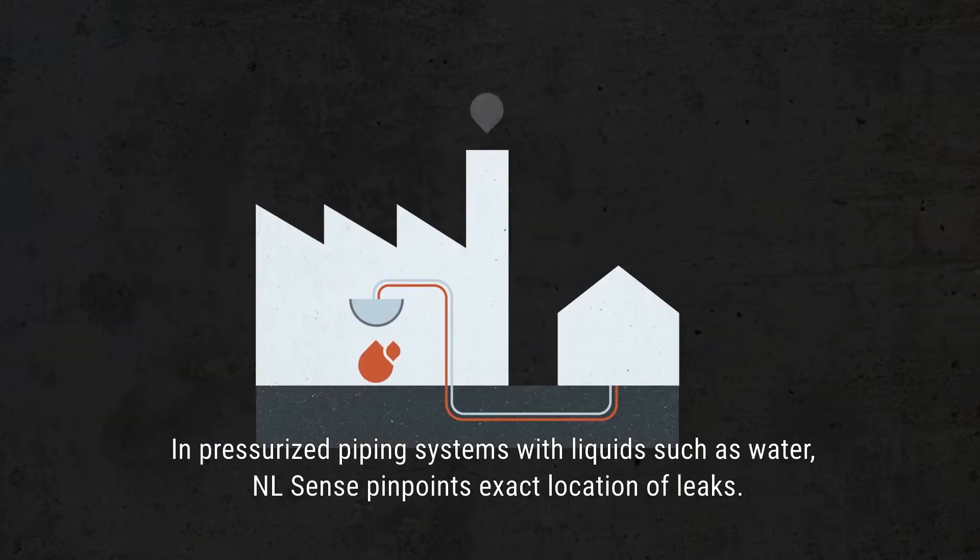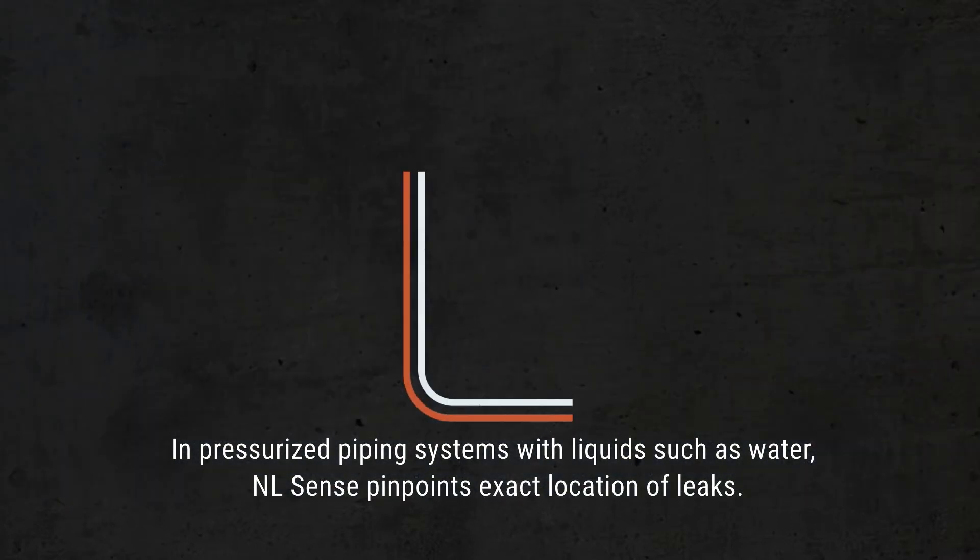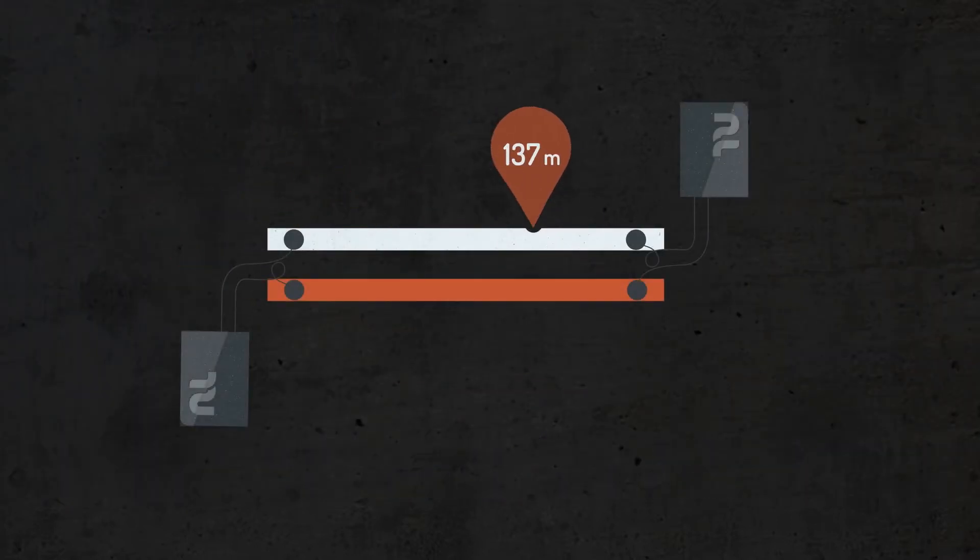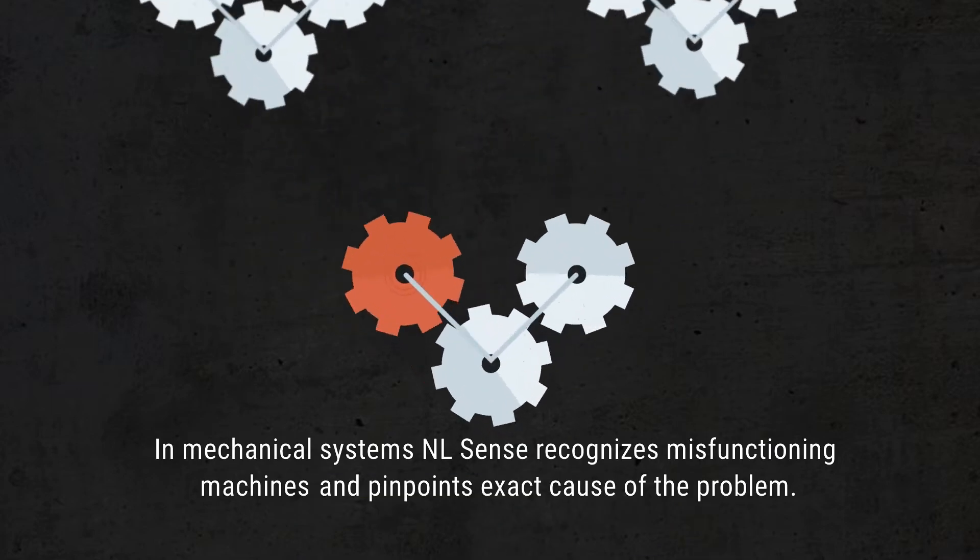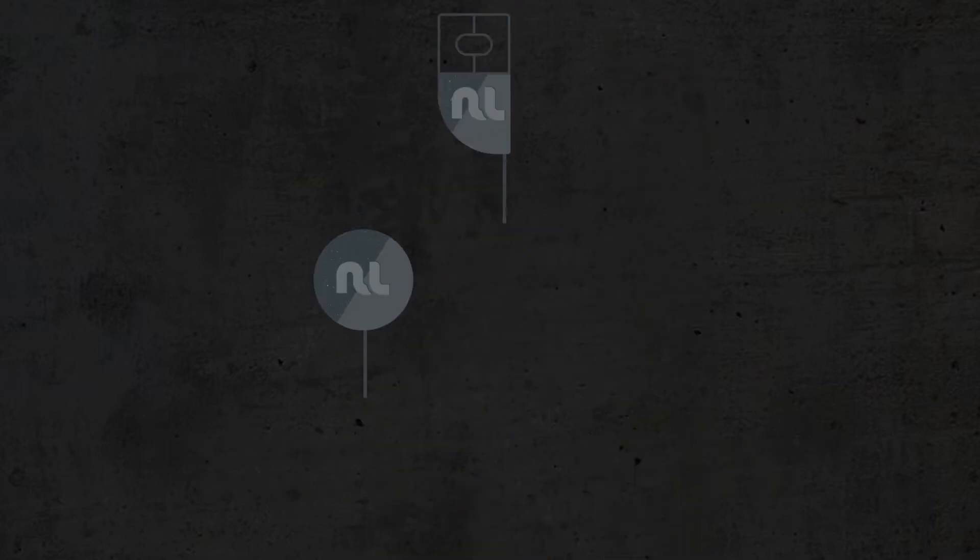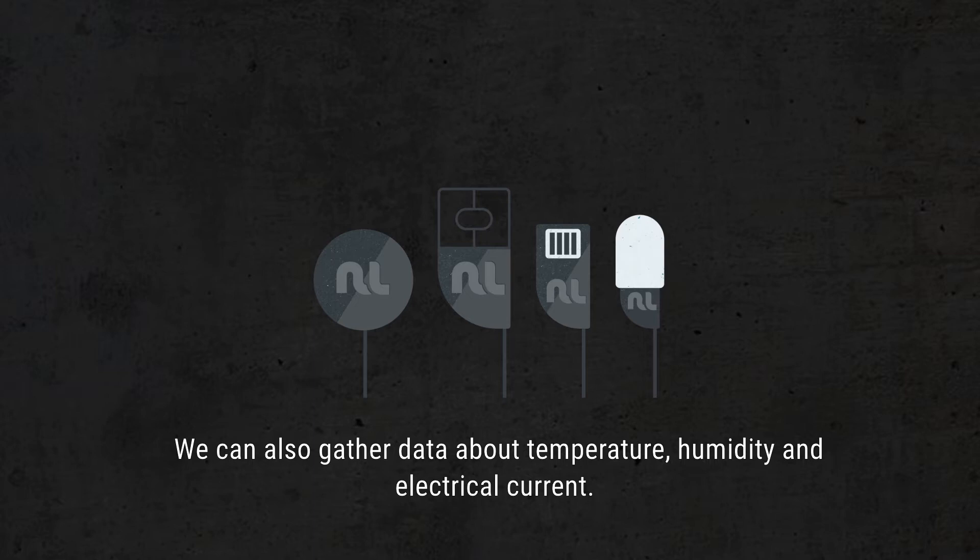In pressurized piping systems with liquids such as water, NL Sense pinpoints the exact location of leaks. In mechanical systems, NL Sense recognizes malfunctioning machines and pinpoints the exact cause of the problem. We can also gather data about temperature, humidity and electrical current.